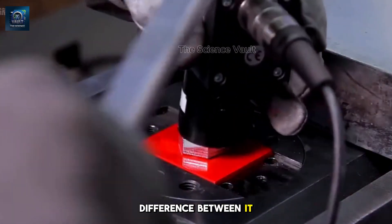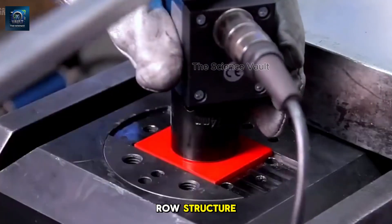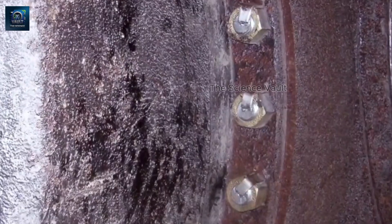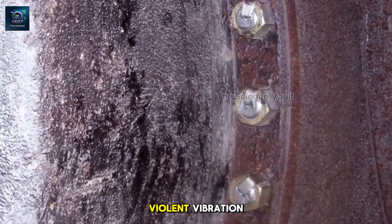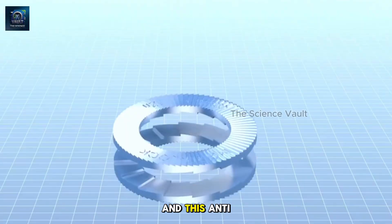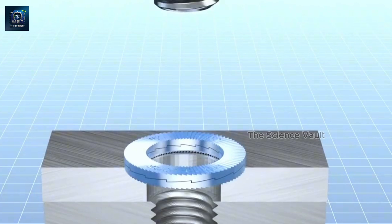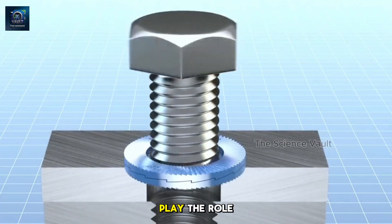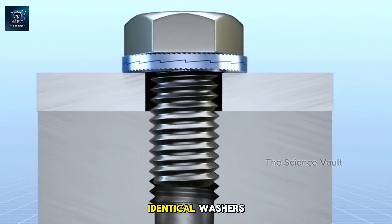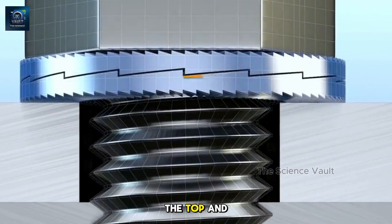The biggest difference between it and the first three nuts is that it uses a washer. And this anti-loosening nut is the famous Nord lock. Anti-loosening washers played a role. This type of anti-loosening washer consists of two identical washers. Each piece has different teeth on the top and bottom.